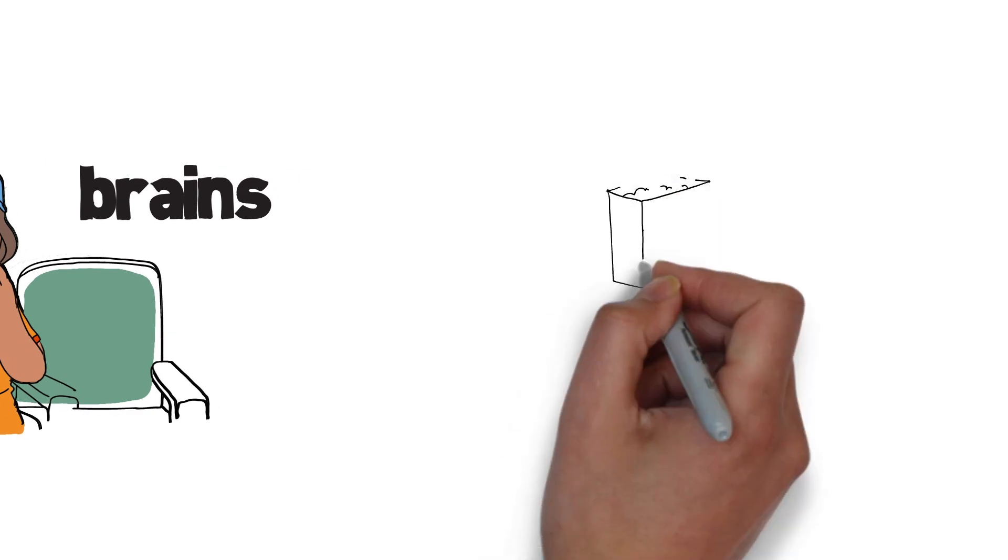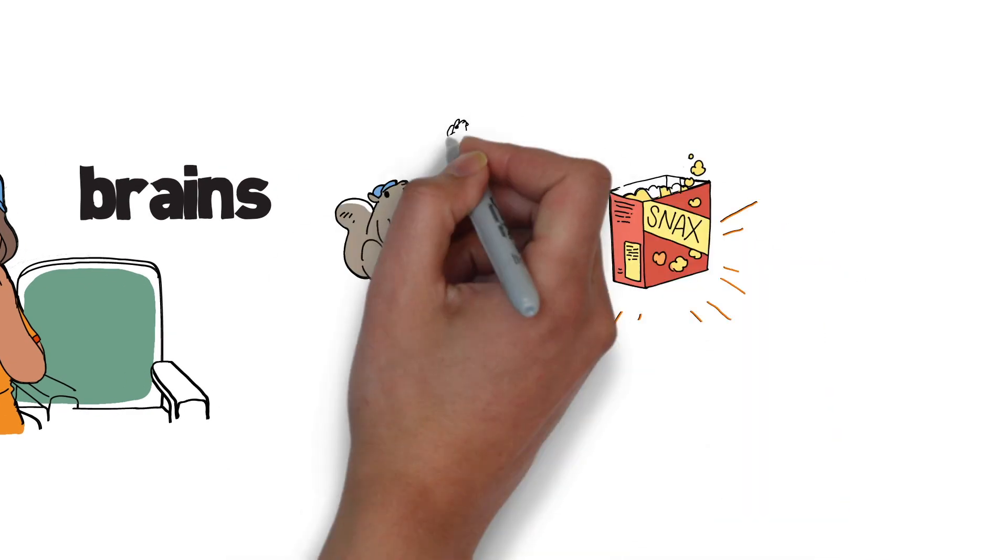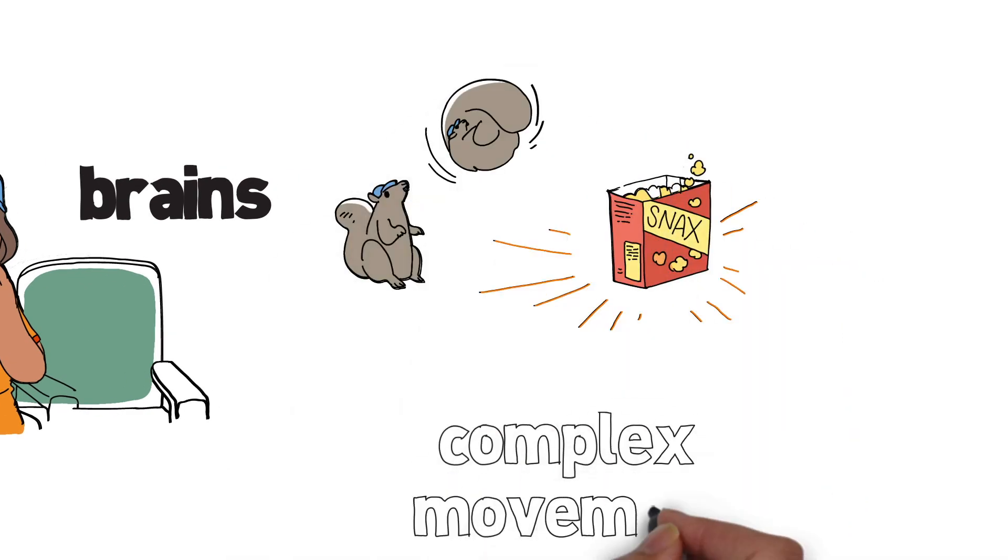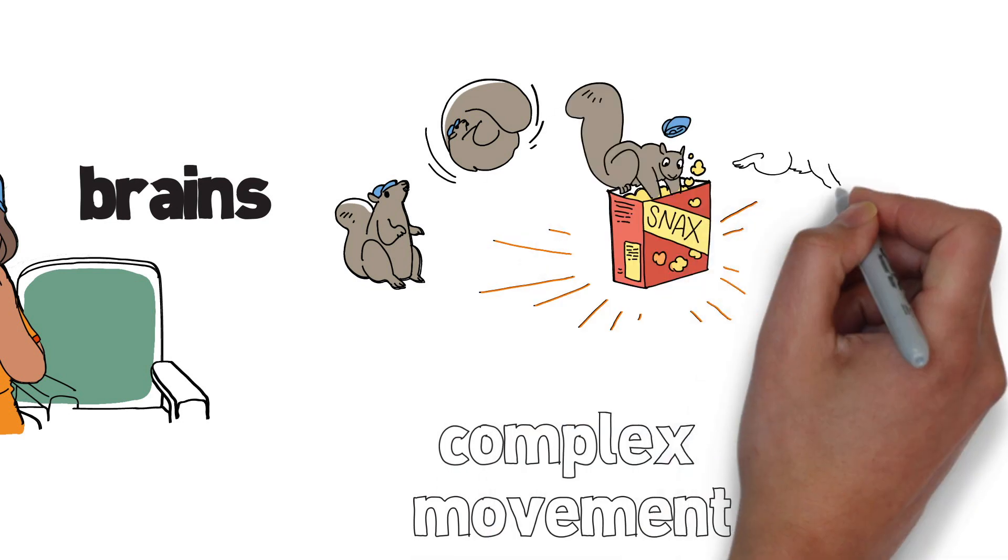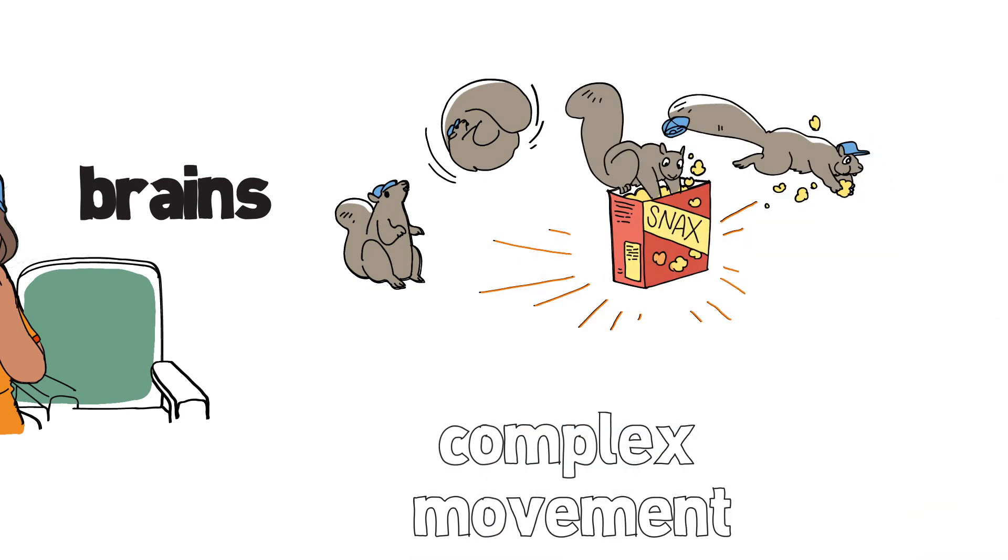We have brains for one reason and one reason only, and that's to produce adaptable and complex movement. Movement is the only way we can interact with the world around us and increase our chances of survival.